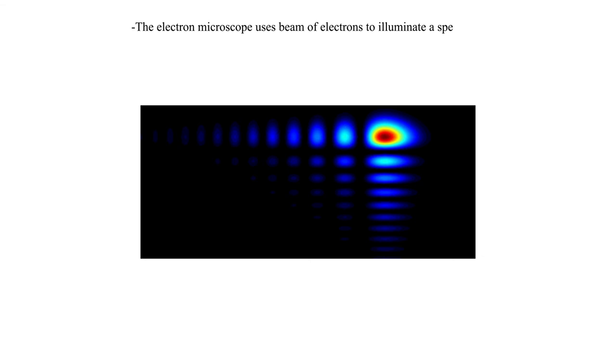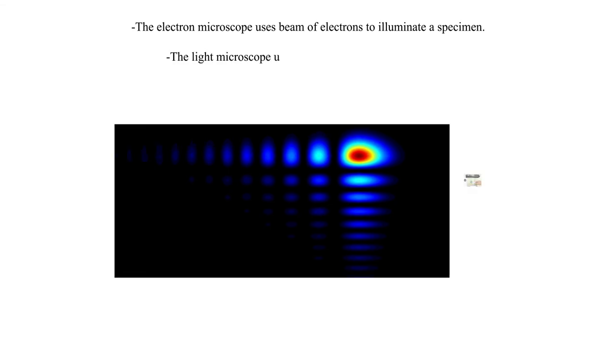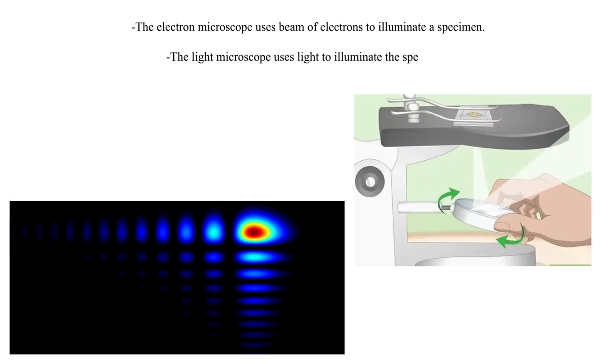The electron microscope uses a beam of electrons to illuminate a specimen. The light microscope uses light to illuminate the specimen. The electron microscope can magnify an object five hundred thousand times.